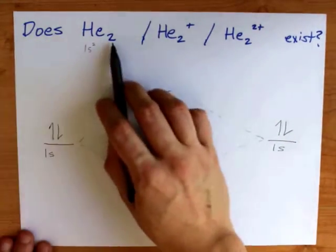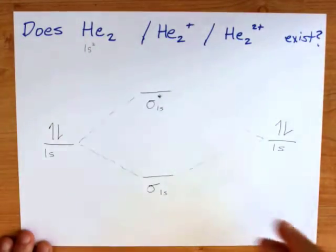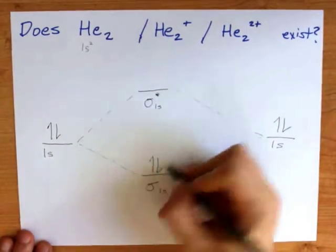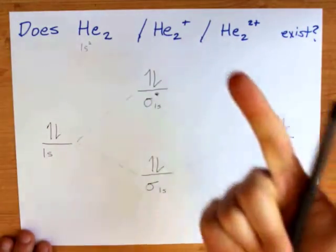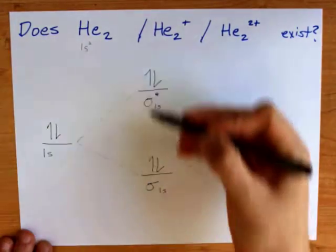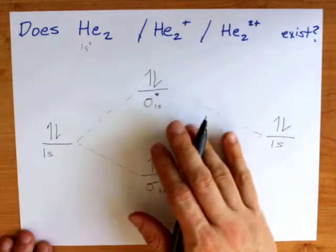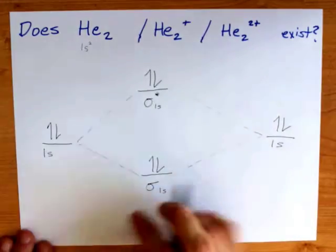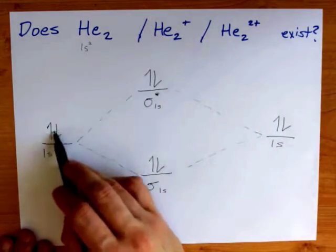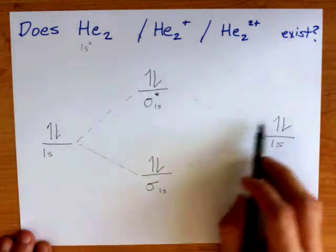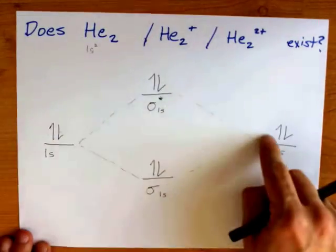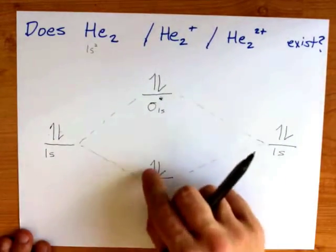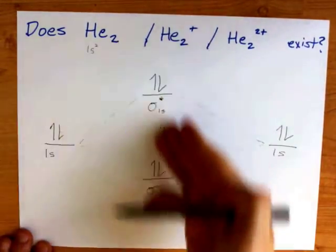Now He₂ still has four electrons, so 1, 2, 3, 4. I'm following the Aufbau principle and Hund's rule by filling from the bottom up in this molecular orbital diagram. What matters is that you have four electrons in the atomic orbitals to start with and four electrons in the molecular orbitals to end with.